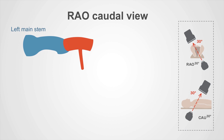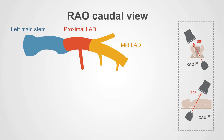The left main stem then divides or bifurcates into two. The first branch is the proximal left anterior descending artery (LAD), which runs down the front of the heart. It often has a small branch perforating deep into the septum of the ventricle, known as a septal perforator branch. This branch is important in procedures such as alcohol septal ablation for the treatment of obstructive hypertrophic cardiomyopathy. The LAD then becomes the mid-LAD, and after a further diagonal branch, becomes the distal LAD.